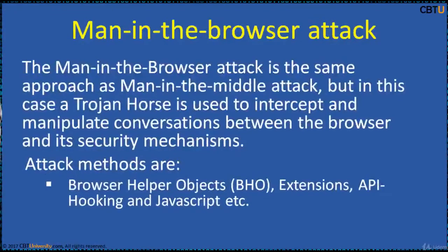The Man-in-the-Browser attack follows the same approach as the Man-in-the-Middle attack, but in this case a Trojan horse is used to intercept and manipulate conversations between the browser and its security mechanisms. Sniffing or modifying transactions in the browser is done while still displaying the user's intended transaction after capturing financial or sensitive information. Attack methods include Browser Helper Objects (BHO), BHO extensions, API hooking, and JavaScript.